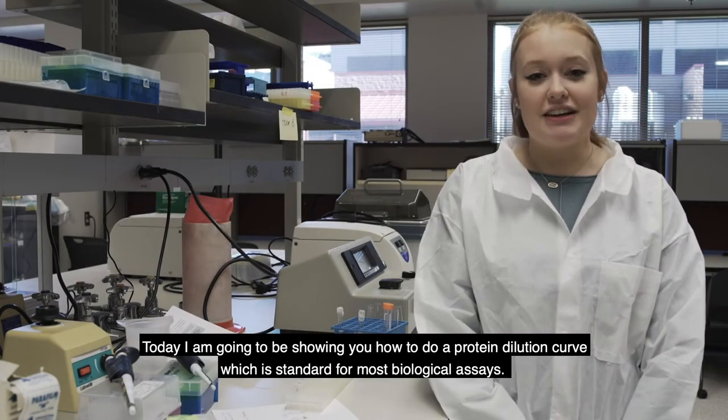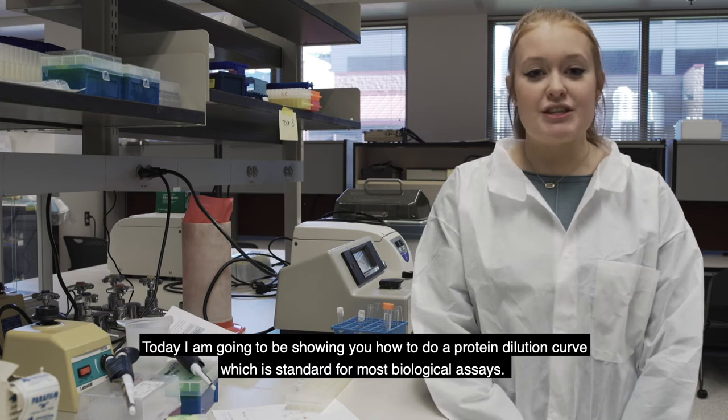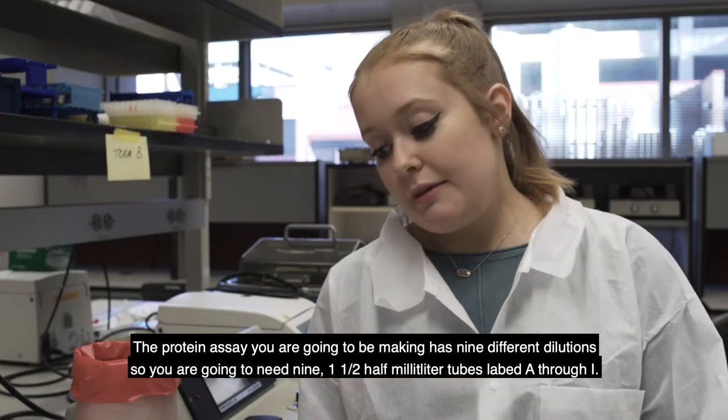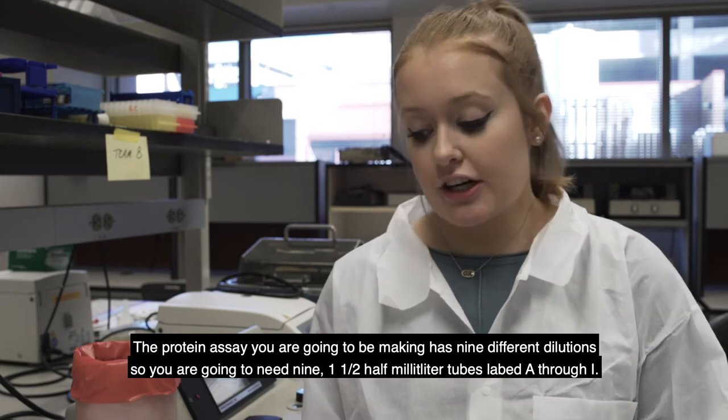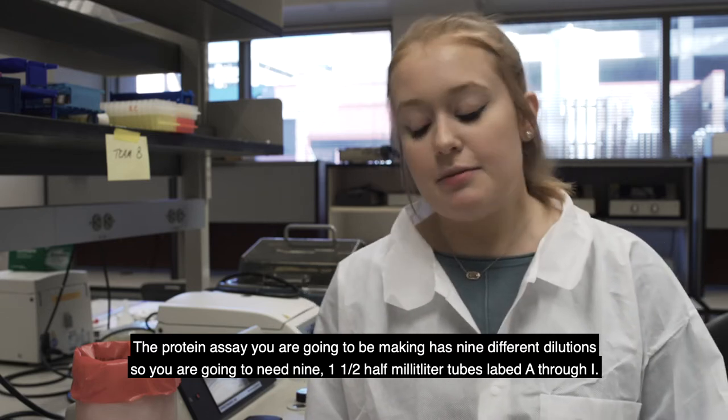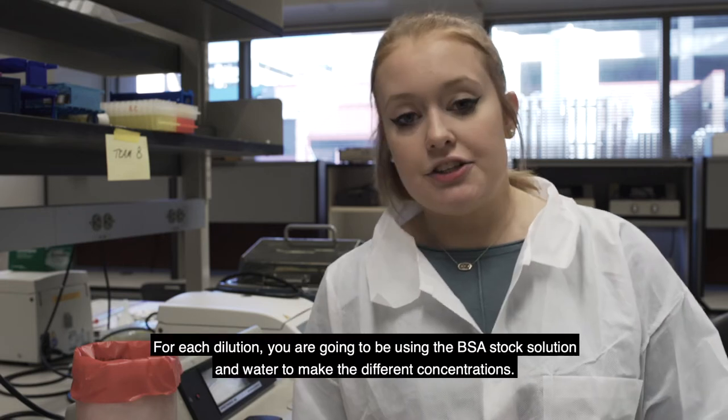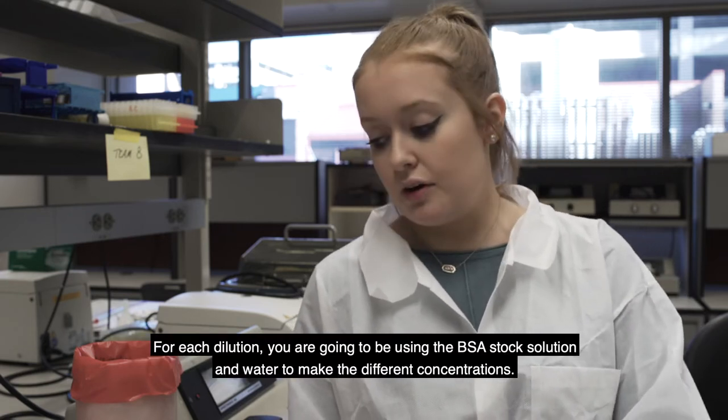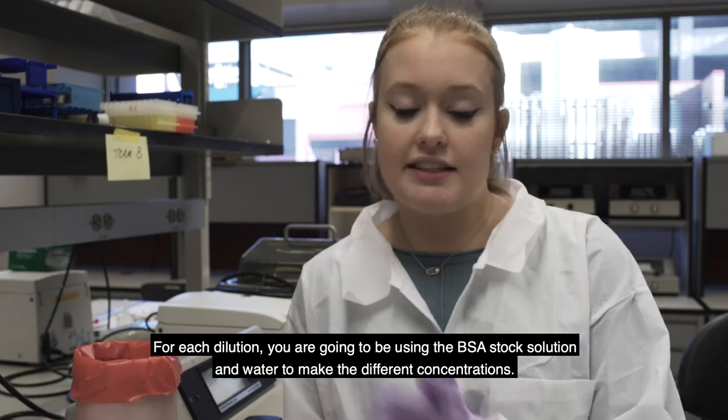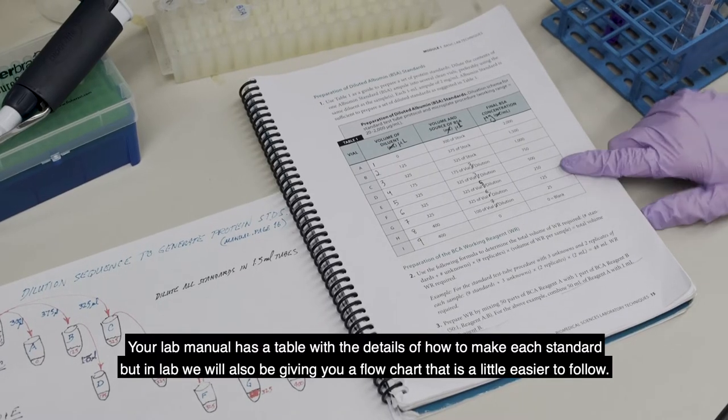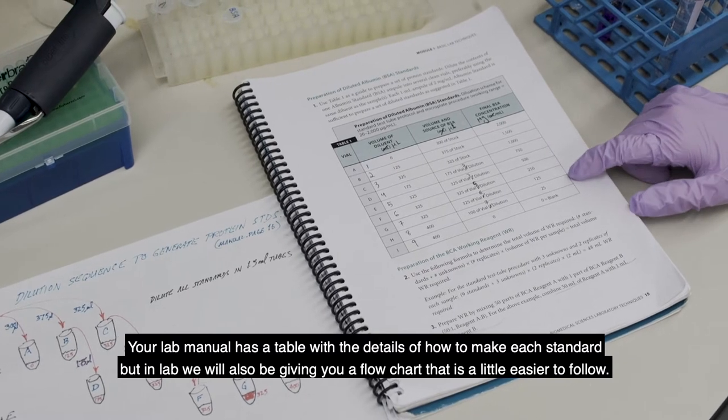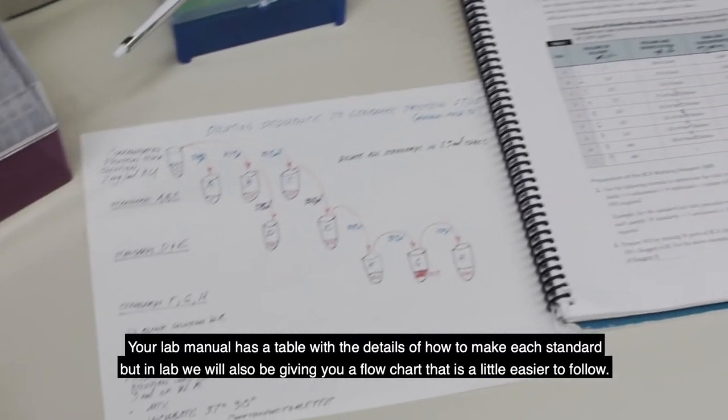Today I'm going to be showing you how to do a protein dilution curve, which is the standard for most biological assays. The protein assay, you're going to be making nine different dilutions. So you're going to need nine, one and a half milliliter tubes labeled A through I. For each dilution, you're going to be using the BSA stock solution and then water to make the different concentrations. The lab manual has a table with the details of how to make each standard, but in lab, we'll also be giving you a flow chart that's a little bit easier to follow.